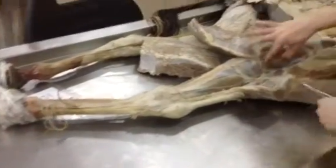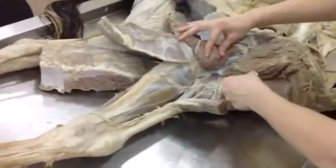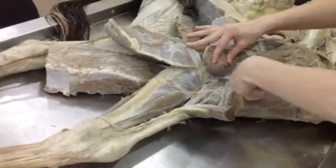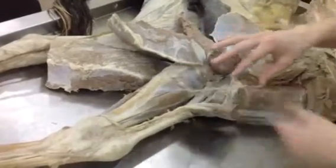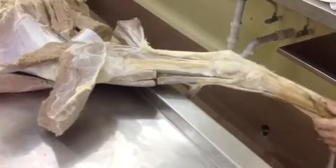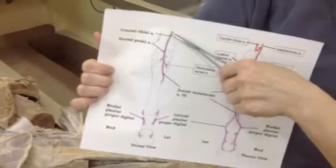What I mainly wanted to point out is from popliteal, you have a cranial and a caudal tibial artery, and that's going to dive and go to the front. It was a little confusing when we found it, so what I want to show you first is this — right here is your cranial tibial artery.